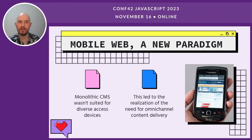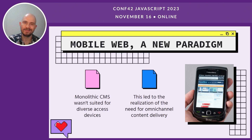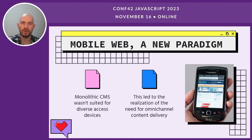The mobile web came up and there was a new paradigm. The monolithic CMS wasn't suited for serving content to diverse access devices, often requiring different versions of websites, typically simplified for mobile users. Devices and IoT devices such as smartphones, gaming consoles, or voice assistants like Alexa further complicated this problem. The need for omni-channel delivery became very evident.